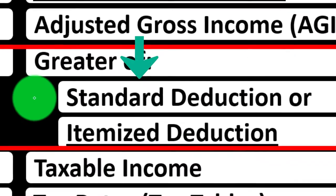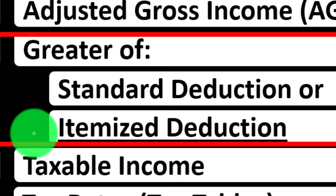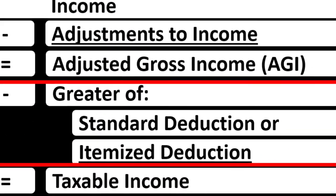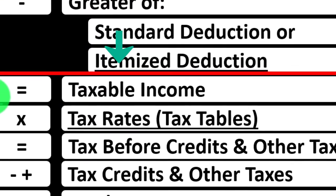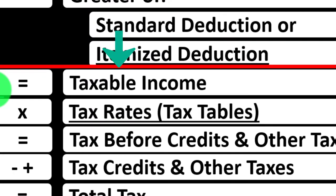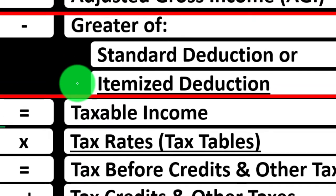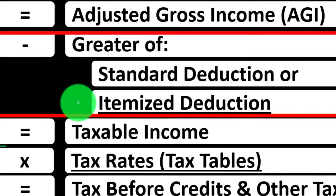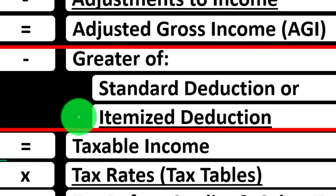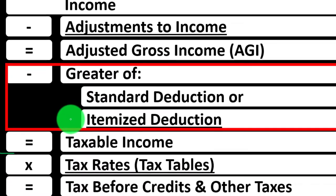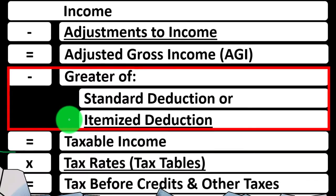The deductions down below, whether they be the standard deduction or the itemized deductions, are not going to have an impact on the adjusted gross income — they're going to have an impact on the bottom line, which is the taxable income. So these deductions down below are not going to affect the phase-out calculations taking place with regards to certain deductions and certain credits. So you want to keep those things distinct in your mind.